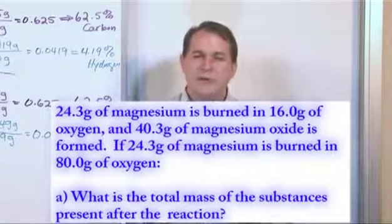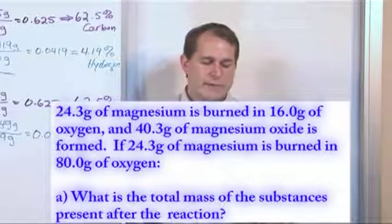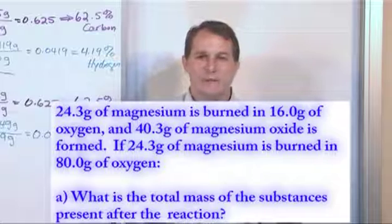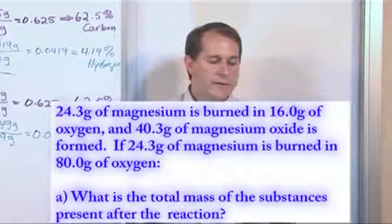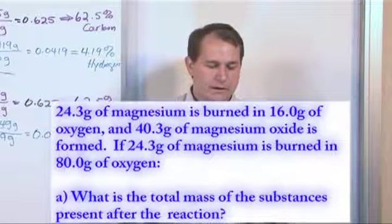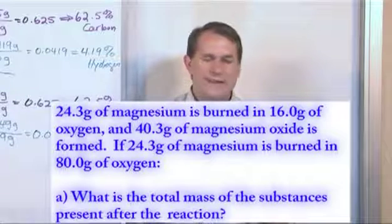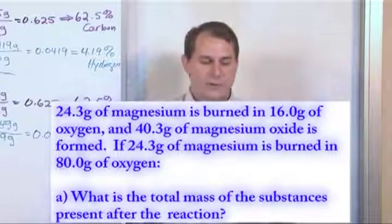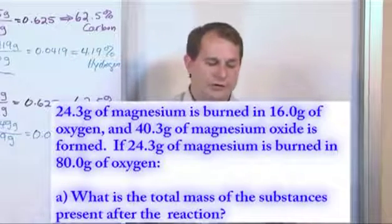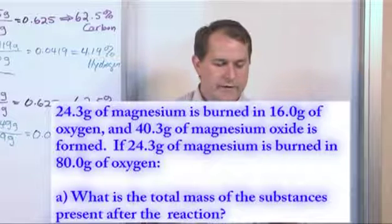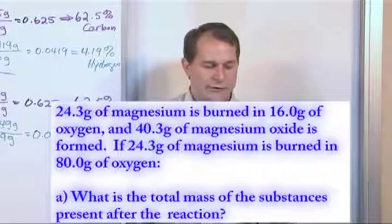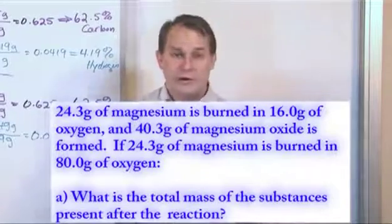So there's a lot of numbers here, but really you have to take it one step at a time. First thing we know is 24.3 grams of magnesium, we burn it in 16 grams of oxygen, and we get 40.3 grams of magnesium oxide. But if we turn around and take the same exact amount of magnesium, 24.3 grams, and we flood the chamber with a lot more oxygen, 80 grams of oxygen, first part is, what is the total mass of the substances present after the reaction?